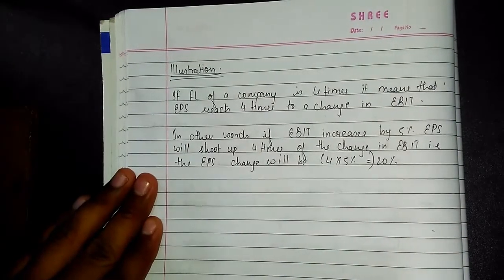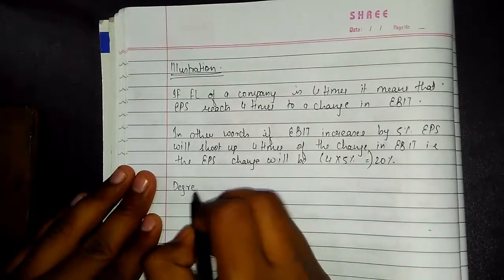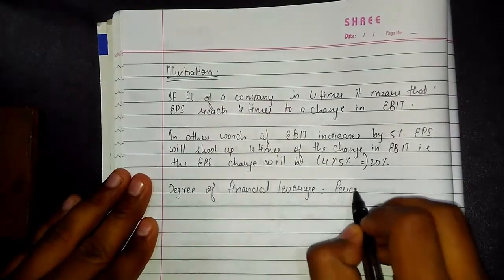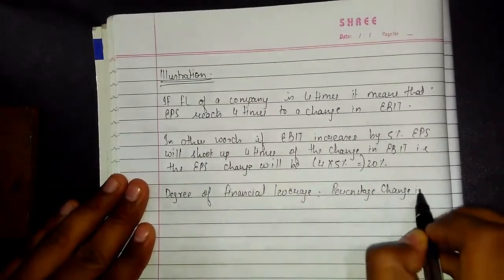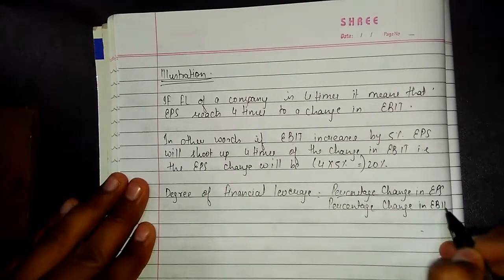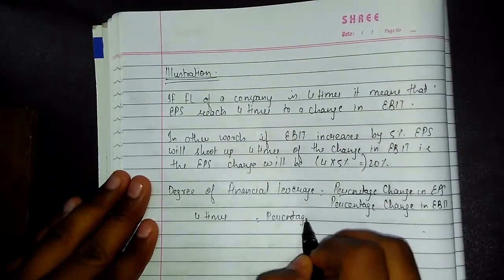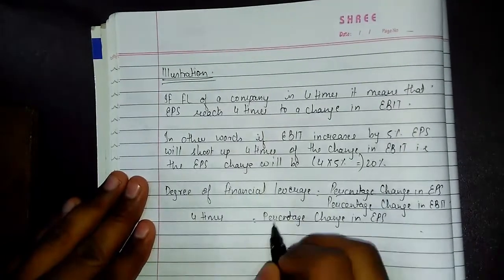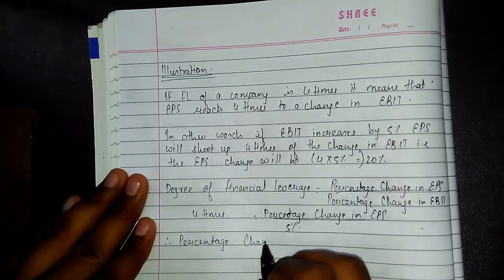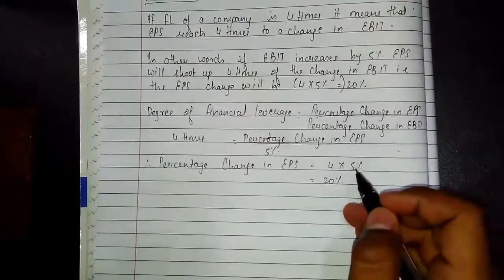To show this in formula: Degree of Financial Leverage = % change in EPS ÷ % change in EBIT. Here, DFL was 4 times (given) and % change in EBIT was 5% (given). Therefore, % change in EPS = 4 × 5% = 20%.